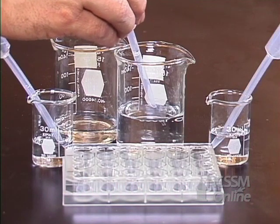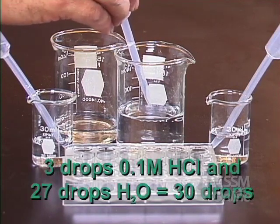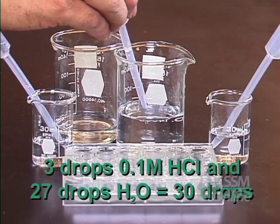You now have a total of 30 drops in your second well. This is a 1 to 10 dilution from the first well.